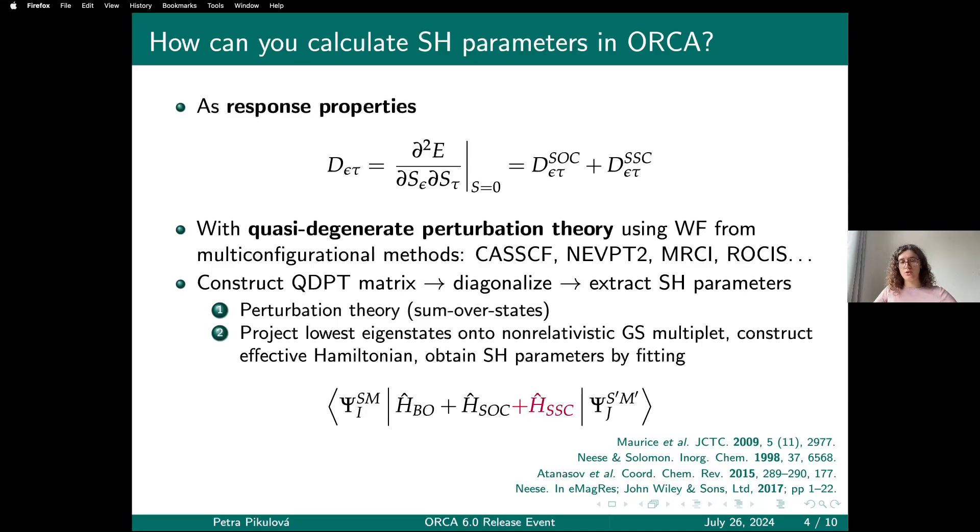The other type of calculation possible in ORCA is based on quasi-degenerate perturbation theory, where you start from a wave function theory calculation that gives you an approximate solution for your Born-Oppenheimer molecular Hamiltonian—not only the ground state but also some number of excited states. These states are used by the program to construct the QDPT matrix, which is the matrix representation of the Born-Oppenheimer molecular Hamiltonian plus the perturbing terms: spin-orbit coupling and spin-spin coupling. This matrix is then diagonalized to obtain states and energies.